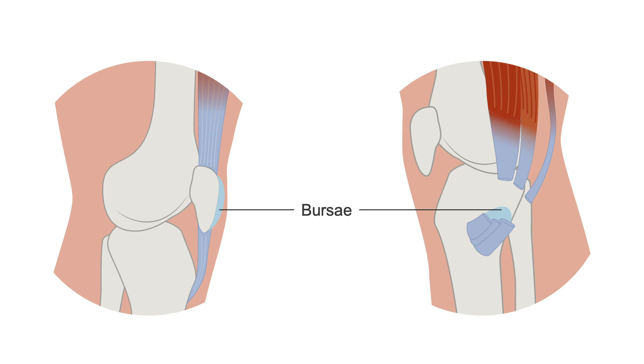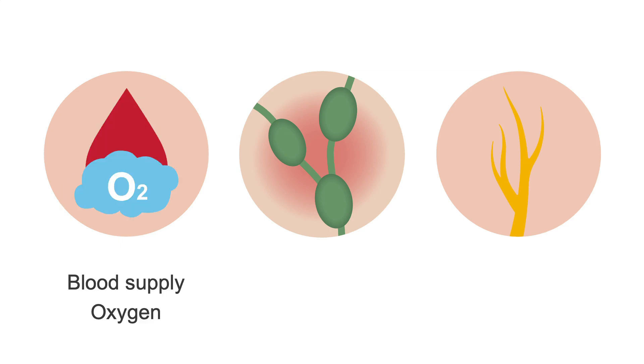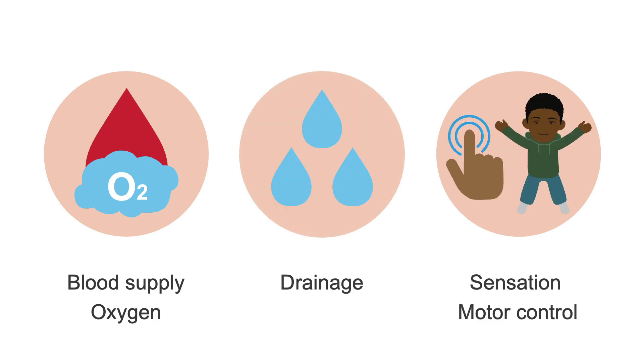Bursa are important thin fluid-filled sacs located between the bones, tendons, muscles, and joints to also reduce friction and facilitate movement. Blood vessels, lymphatics, and nerves are also in the vicinity to provide adequate blood supply, oxygen, drainage, sensation, and motor control.